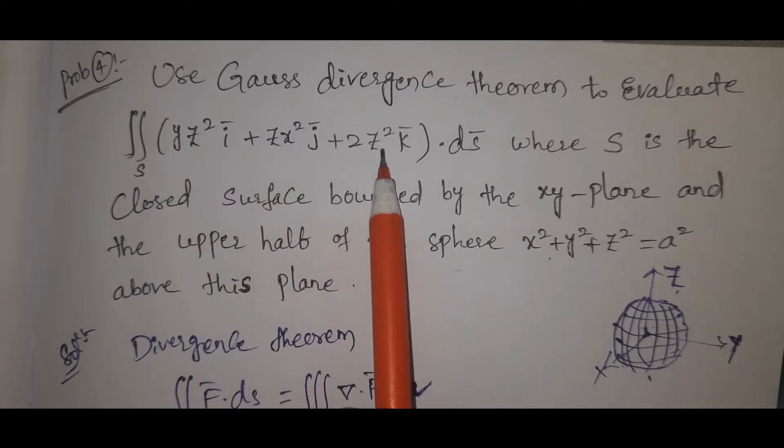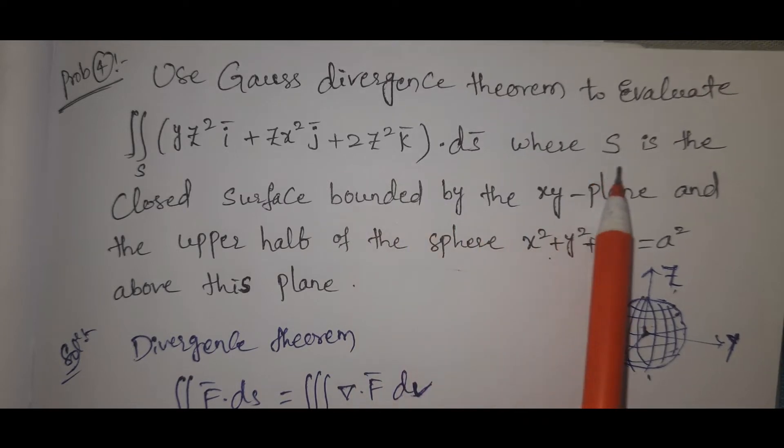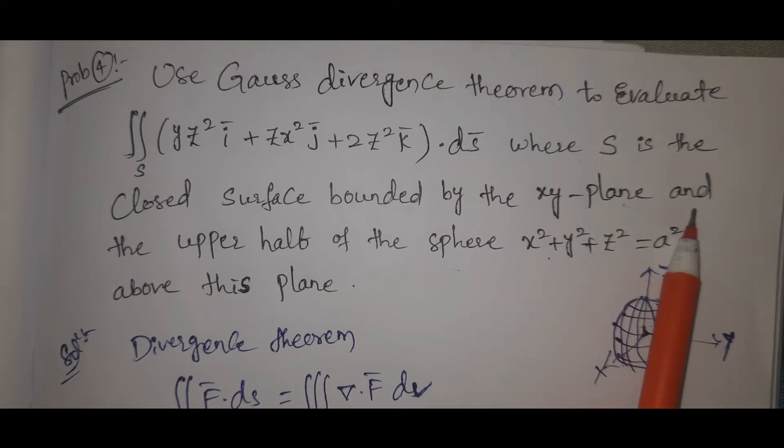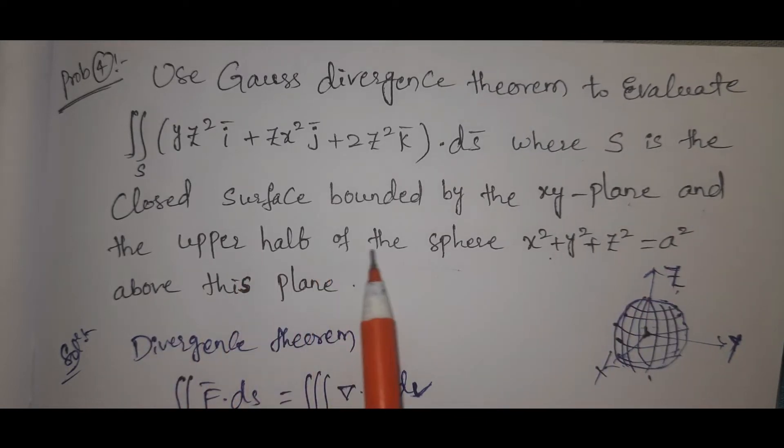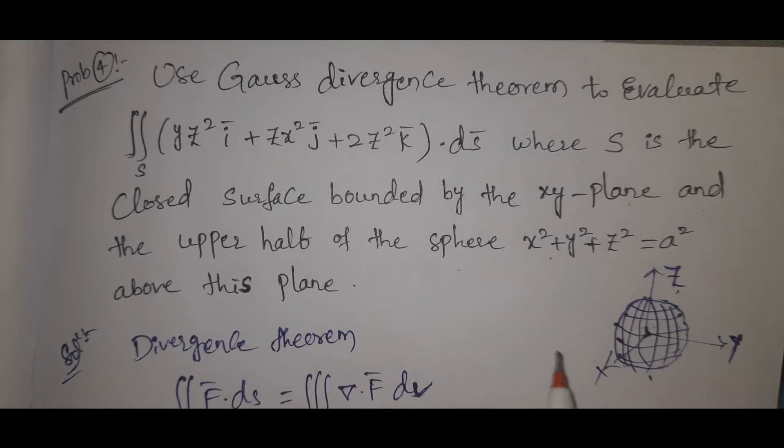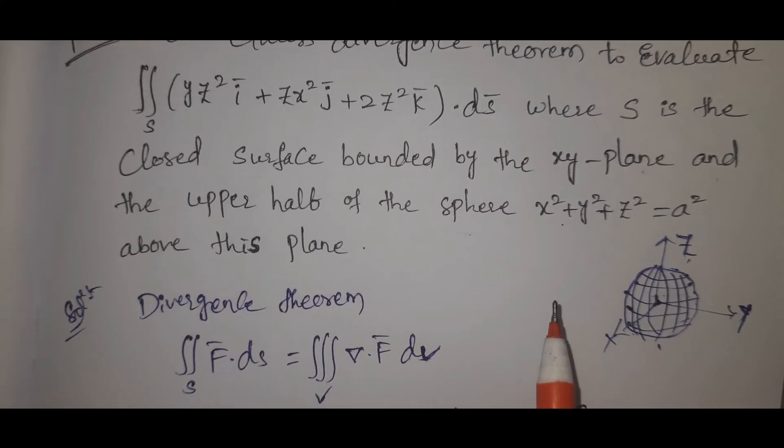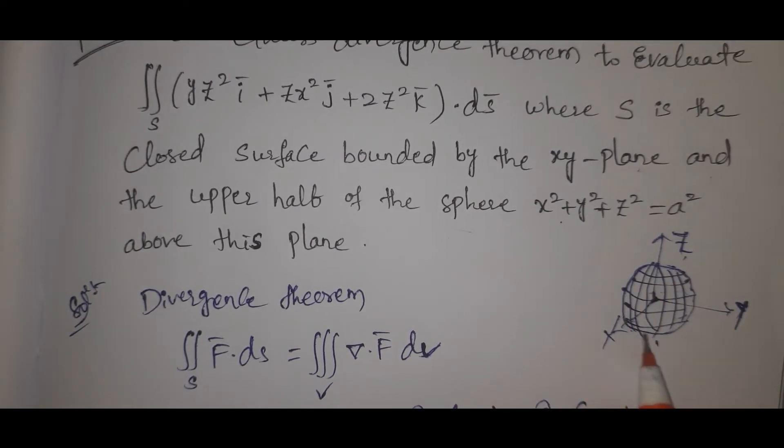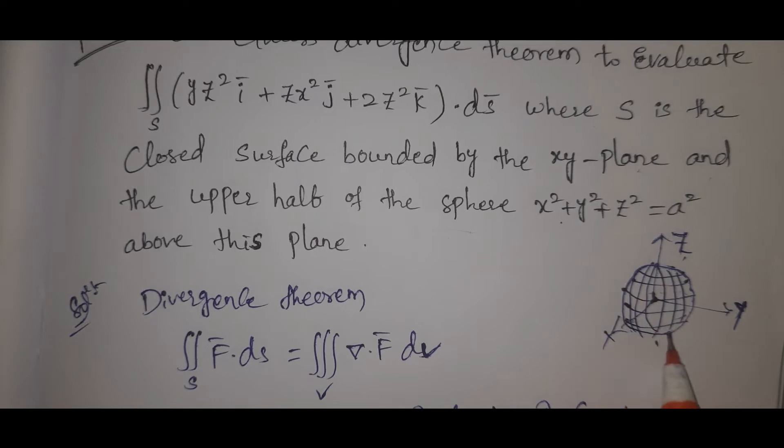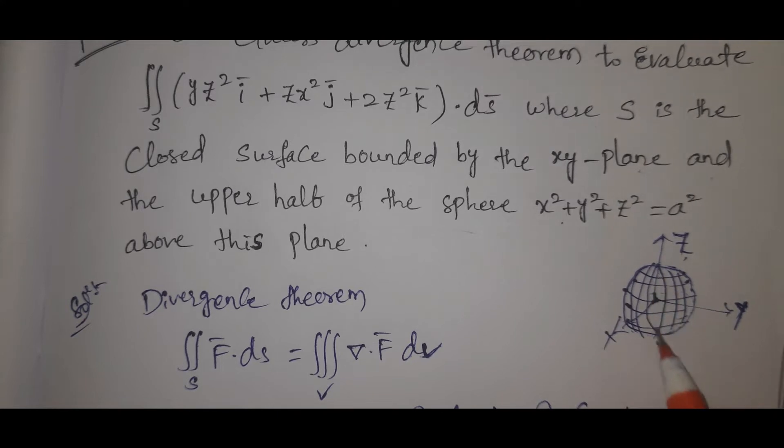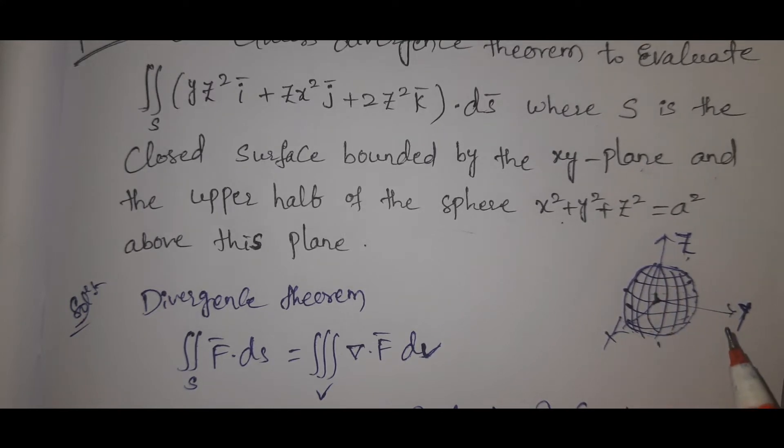The problem is to evaluate the surface integral F bar dot dS bar where F = (YZ², ZX², 2Z²) and S is the closed surface bounded by the XY plane and the upper half of the sphere X² + Y² + Z² = a² above this plane.